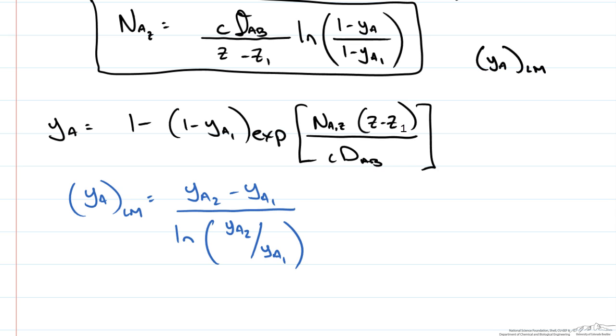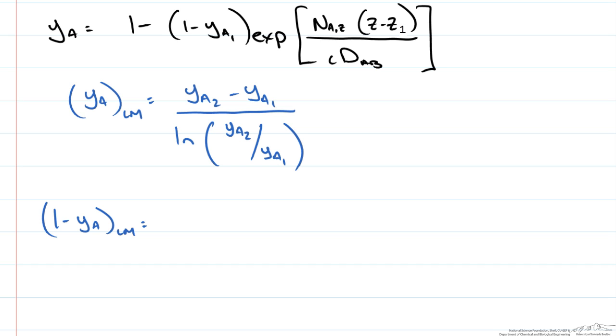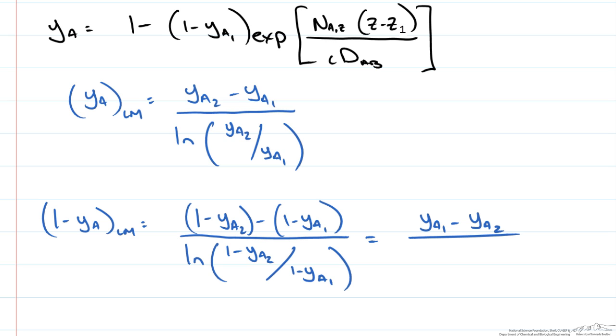So we could take this to the case since we have 1 minus YA. The log mean of 1 minus YA would have a very similar form: 1 minus YA2 minus 1 minus YA1 over the natural log of the ratio of the two. And when we simplify this, this is just YA1 minus YA2 over the natural log of this ratio.